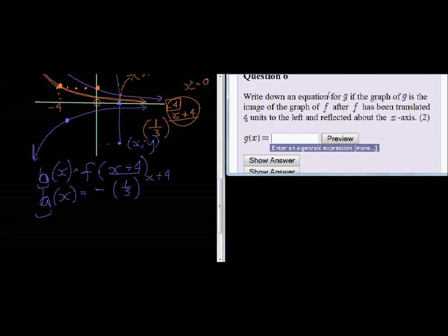So G of X is equal to negative a third to the power—and in brackets we put X plus 4, so that the computer or the program knows that X plus 4, both of those values, come in the exponent. If it wasn't for the bracket, it would have just given the exponent to X. So both of them are in the exponent: X plus 4.